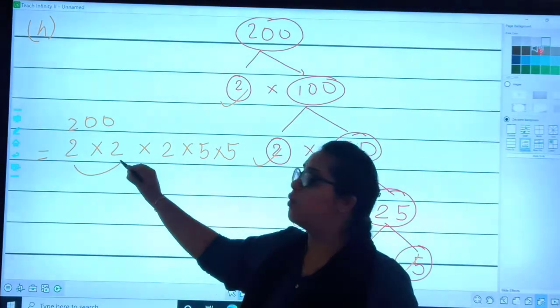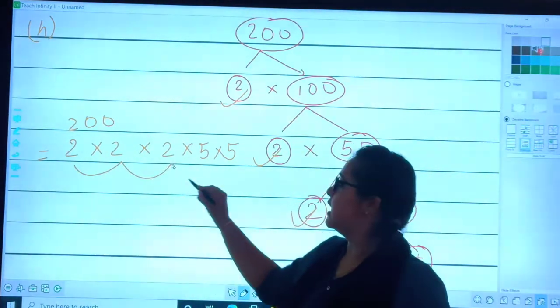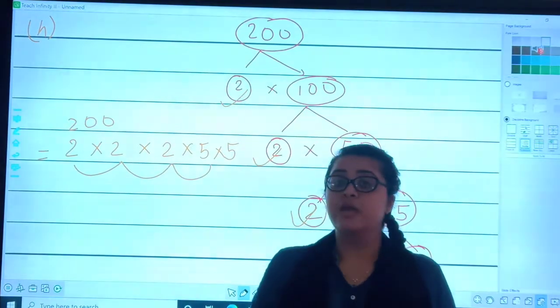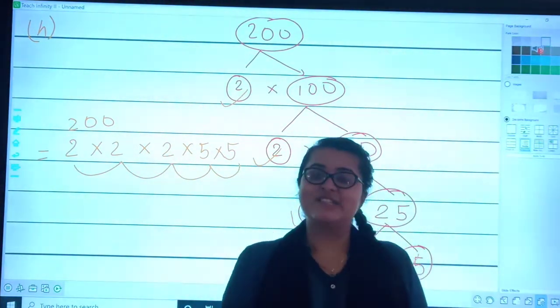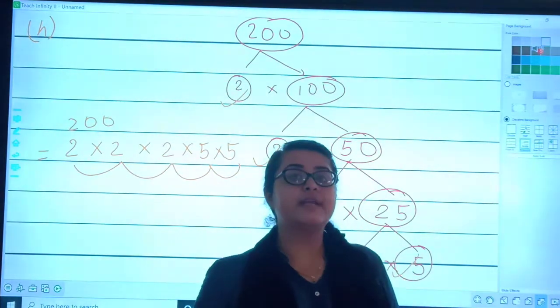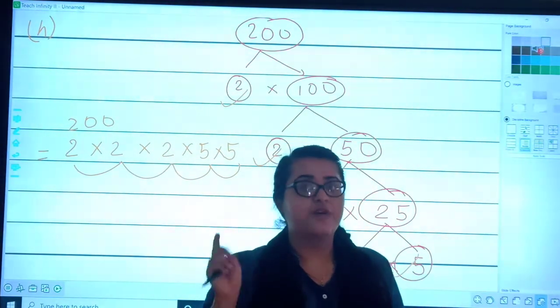Let's multiply it and see whether the answer is correct or not: 2 times 2 is 4, 4 times 2 is 8, 8 times 5 is 40, 40 times 5 is 200. So students, here we complete the description of factor tree method.